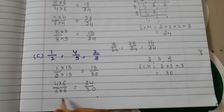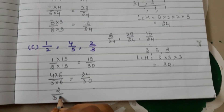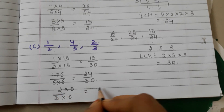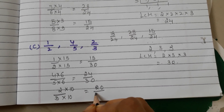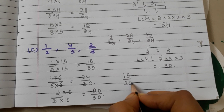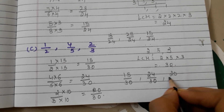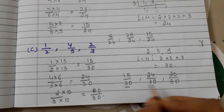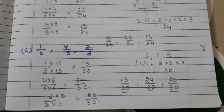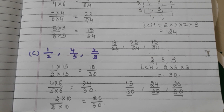Now take the fraction 2 by 3. 3 tens are 30, so we multiply the numerator and denominator with 10: 2 tens are 20 and 3 tens are 30. Now 15 by 30, 24 by 30, and 20 by 30. Observe the denominators — here we have the same denominators. So 15 by 30, 24 by 30, and 20 by 30 are like fractions.